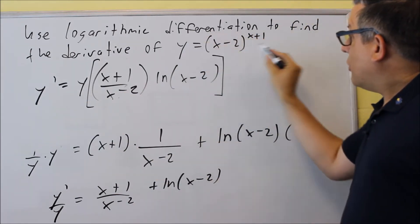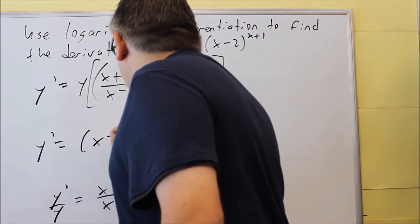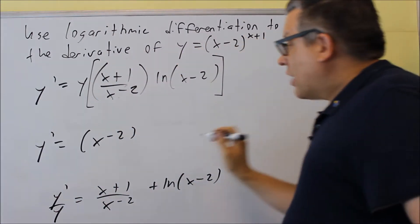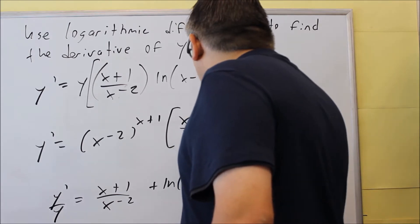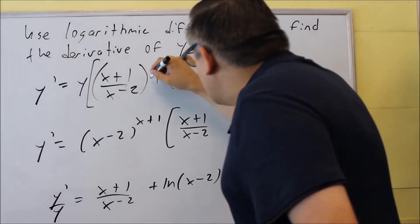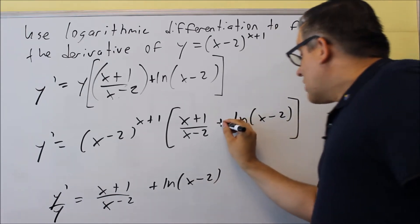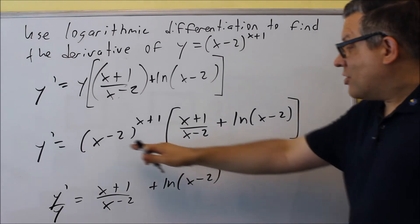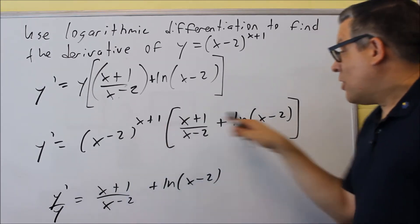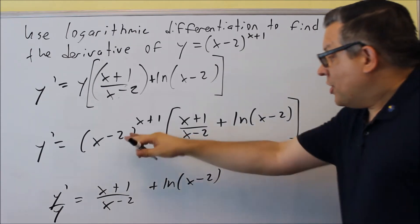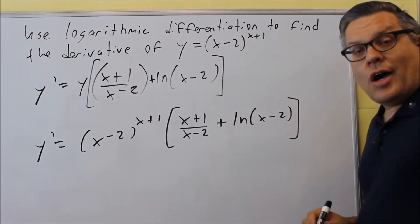We replace Y with the original expression, so Y-prime equals X minus 2 raised to the X plus 1, multiplied by the quantity X plus 1 over X minus 2 plus ln of X minus 2. That's as far as you need to go. Distributing further isn't really beneficial since you'd still have the ln term remaining.